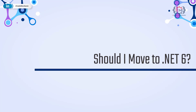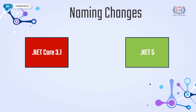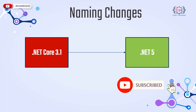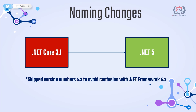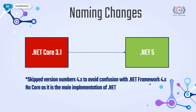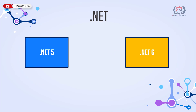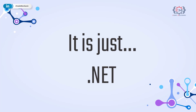Should I move to .NET 6? .NET 5 was the major release right after .NET Core 3.1. Microsoft named it .NET 5 instead of .NET Core 4 for two reasons: they skipped version 4.x to avoid confusion with .NET Framework 4.x, and they dropped 'Core' from the name to emphasize it is the main implementation of .NET going forward — the only exception being ASP.NET Core, which retained the name to avoid confusion.